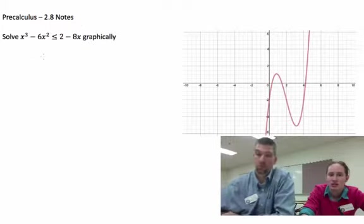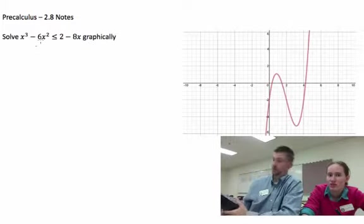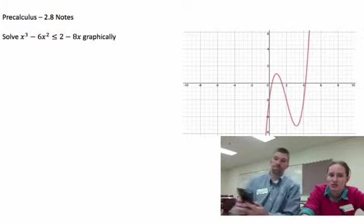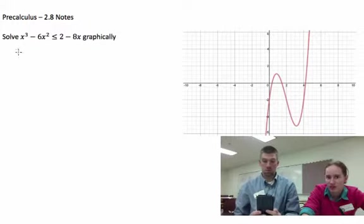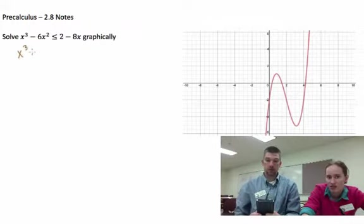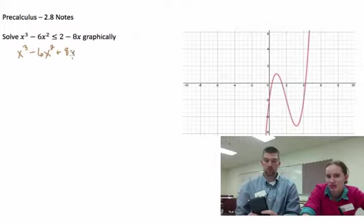We would need to move everything to one side of our equation and then plug it into y equals. What you should actually have in there is x cubed minus 6x squared plus 8x subtract 2, and then it's less than or equal to 0.